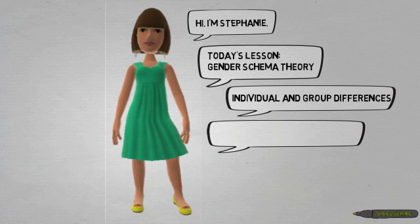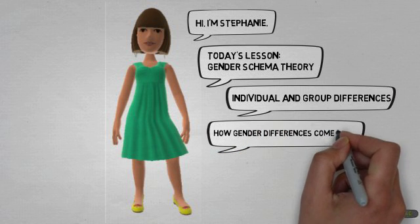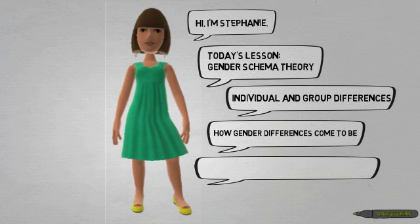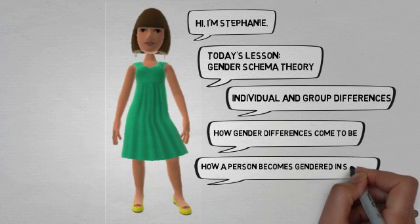Within this very broad subject, gender schema theory focuses on how gender differences come to be and how a person becomes gendered in society.